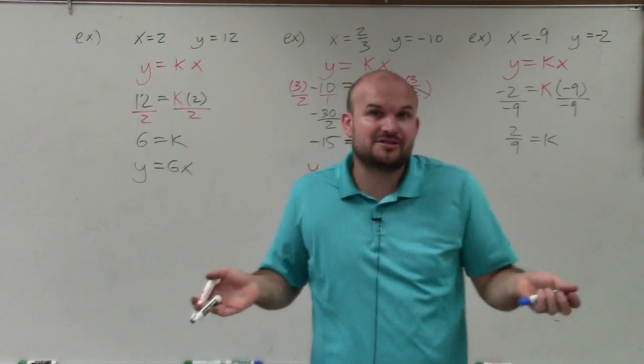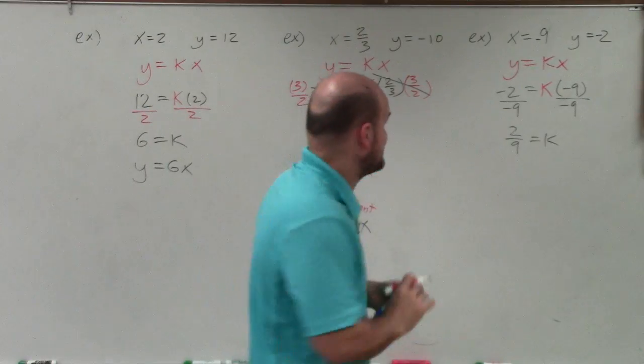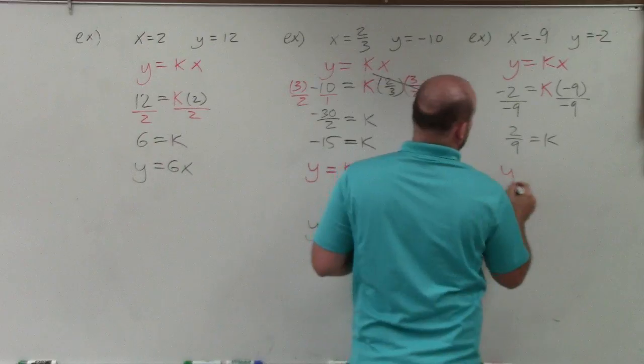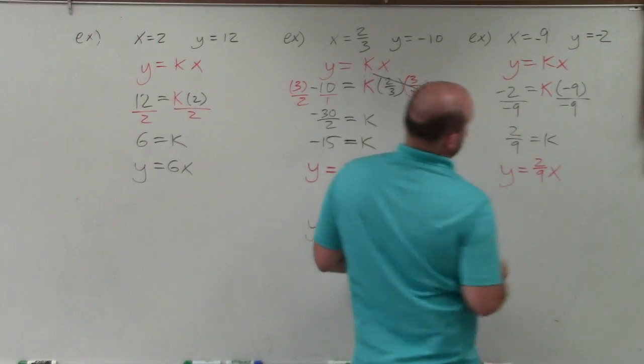Now, my constant is a fraction. But you can have a constant being a fraction. That's perfectly fine. So now I just replace my k with 2 ninths. And I have y equals 2 ninths x.